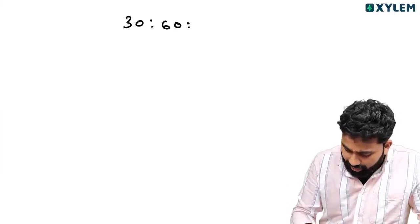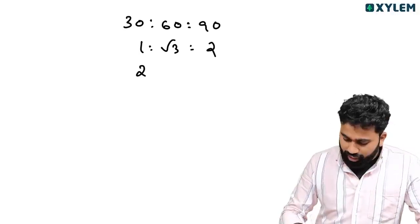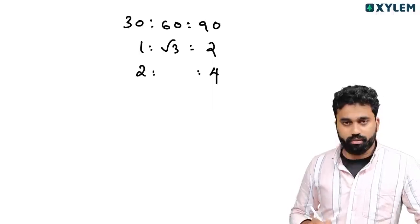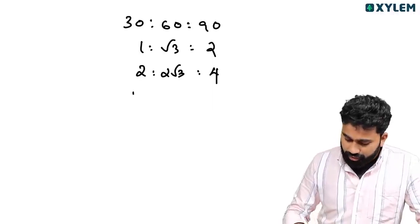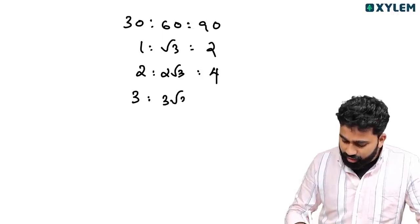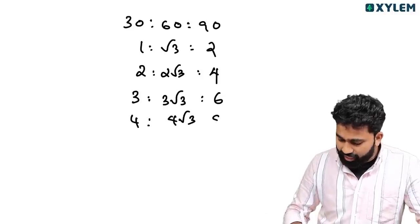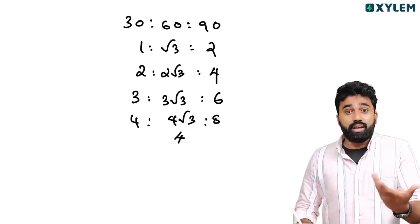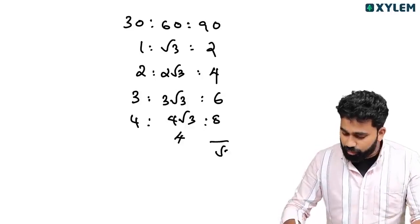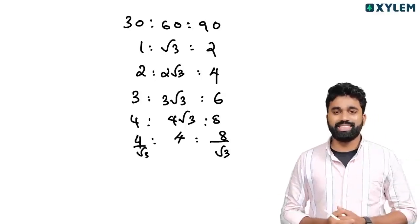That is the next level of complication. Now for the 30-60-90 triangle, we write 1 and root 3 over 2. The side opposite 30° is the smallest, and the sides involve root 3. The values progress: root 3, 2 root 3, 3 root 3, 4 root 3 as you scale the triangle.